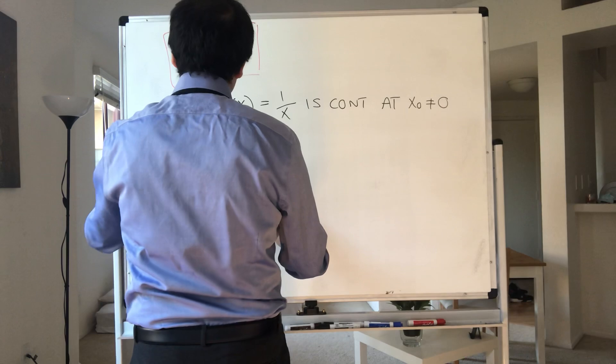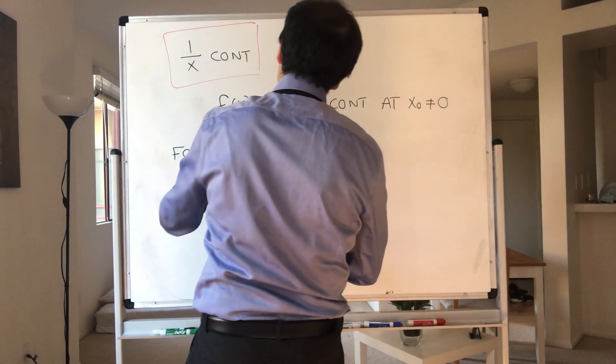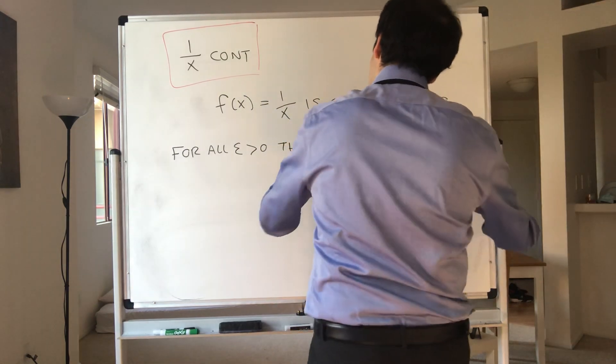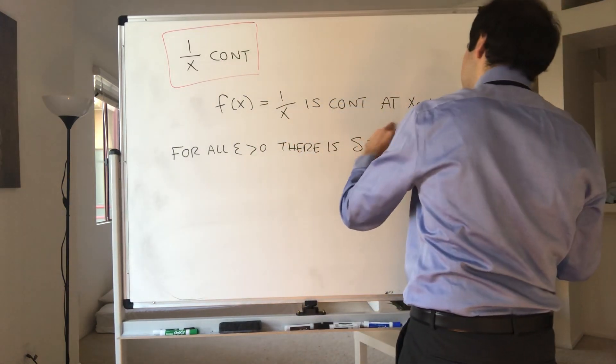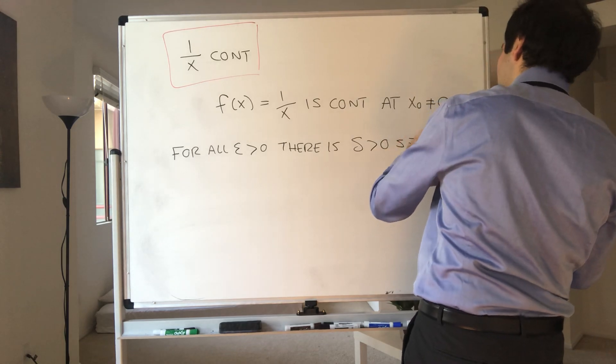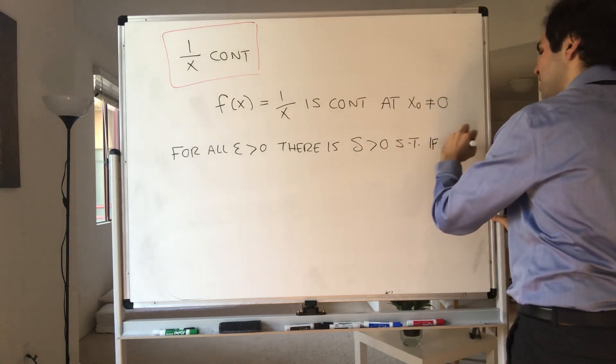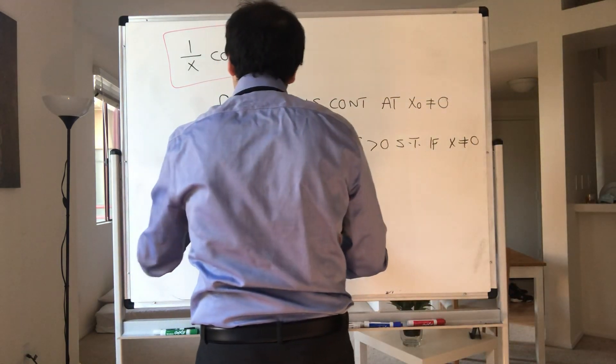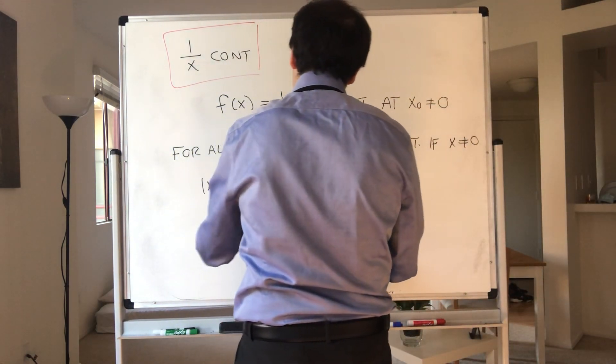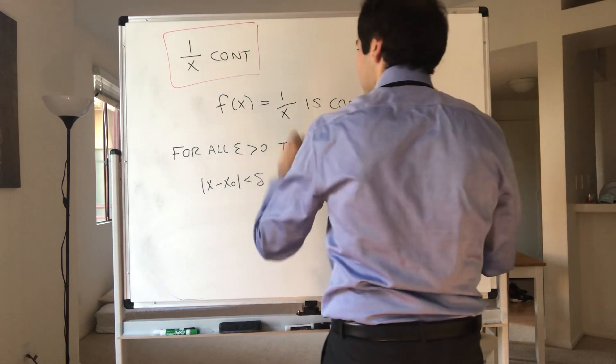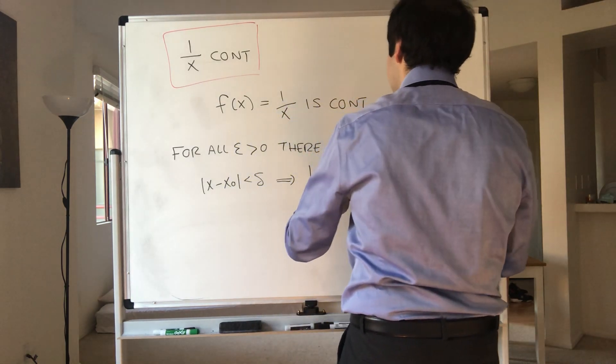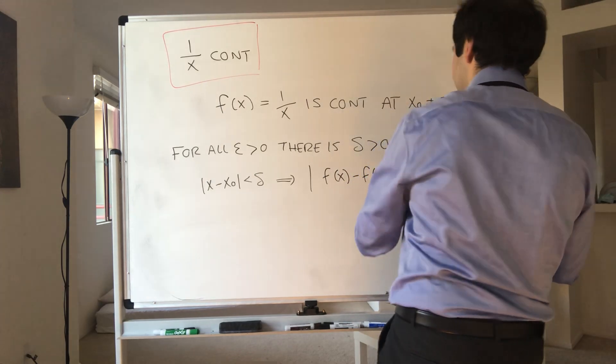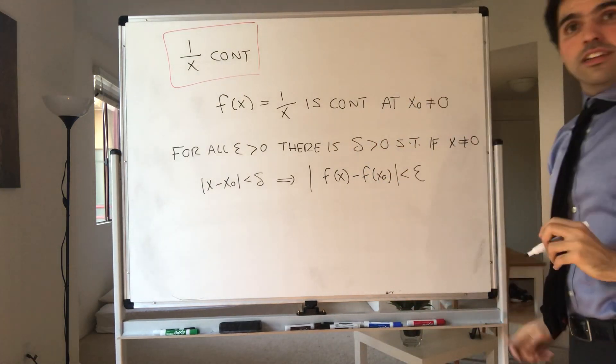So what we need to show is that for all epsilon, there is delta, such that if x is not in the domain, so x is non-zero, then x minus x naught less than delta implies f(x) minus f(x naught) is less than epsilon. All right, so let's do this.